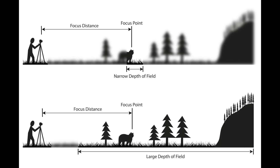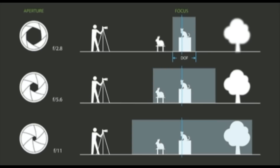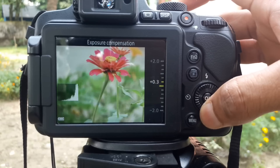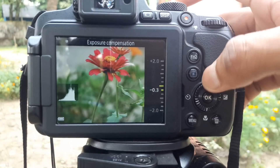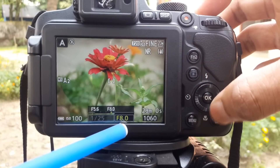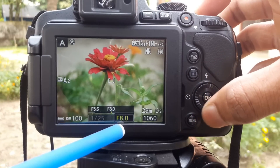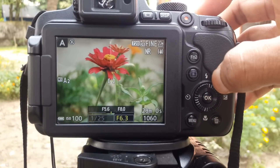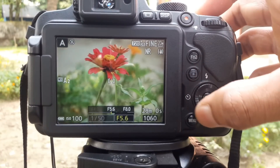Aperture mode is where you can change the size of the lens opening, or aperture, while making a picture. With one dial, you can either close the aperture to let less light in, or open it up to let more light in. Understanding this basic function of aperture helps you decide how to use aperture mode.